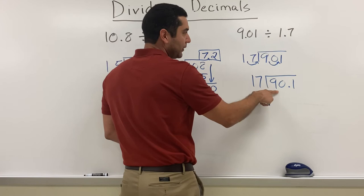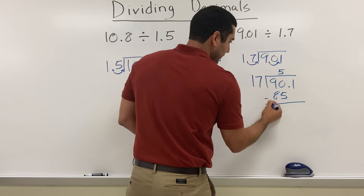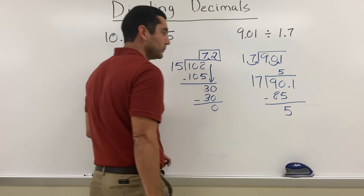I already calculated that 17 can go into 90 exactly five times. 17 times 5 is going to give me 85. I'm going to subtract: 90 minus 85 is going to give me 5.